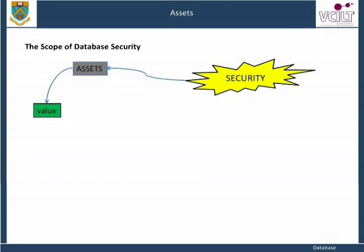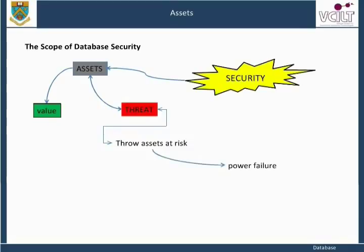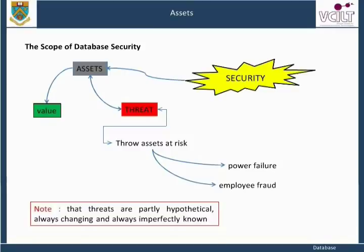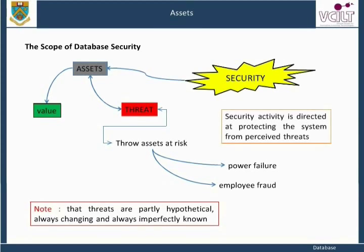All assets are under threat. The second thing is to know what threats are putting your assets at risk. These include everything such as power failure and employee fraud. Note that threats are partly hypothetical, always changing, and always imperfectly known. Security activity is directed at protecting the system from perceived threats.